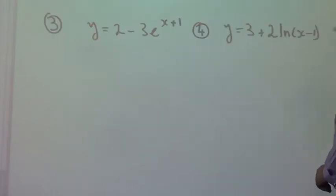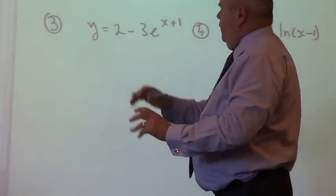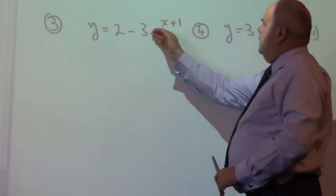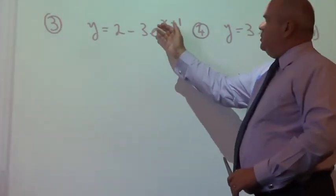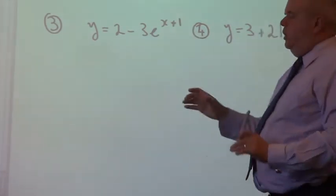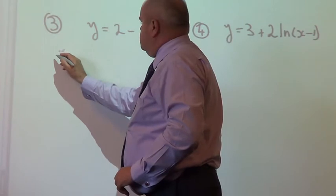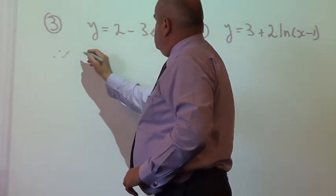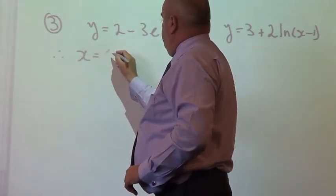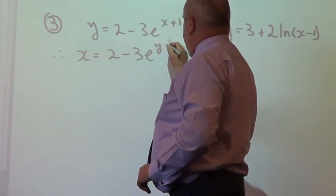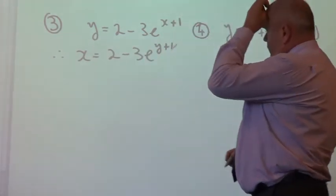So that's those two examples. Let's have a look at these. I'll go back to those in a little while if you're a bit behind. Now, what do we got here? We've got an exponential expression, so we're going to take logs of both sides at some stage. But firstly, we need to swap our x's and y's around. So we've got x equaling 2 minus 3e to the y plus 1.